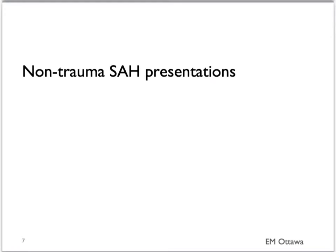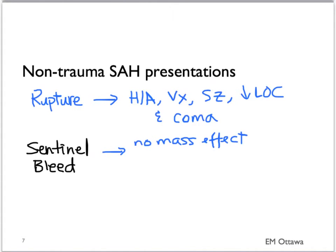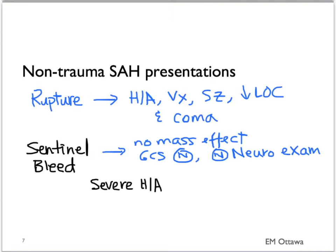A ruptured aneurysm will cause significant mass effect on the brain, leading to headaches, vomiting, seizure, decreased level of consciousness, and coma. Sentinel bleeds, on the other hand, are of small volume and do not produce mass effect on the brain. Therefore, the patient's GCS should be normal with no focal neurological deficits. On history, a sentinel bleed presents as a severe headache that peaks at its onset — also known as a thunderclap headache. The patient might also complain of neck pain, nausea, and vomiting.